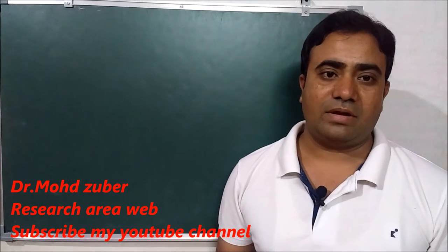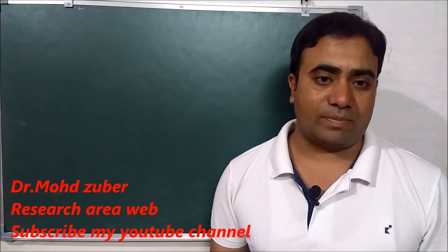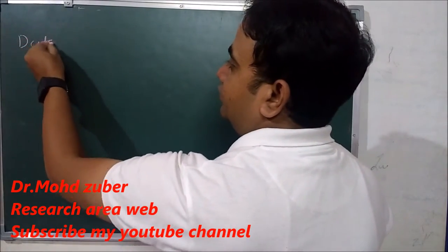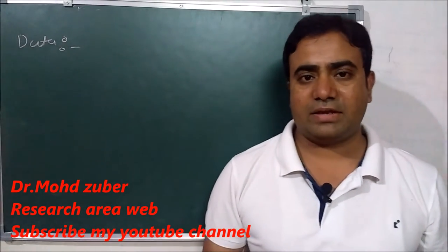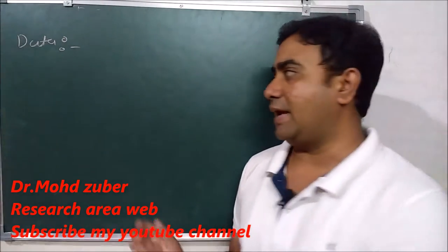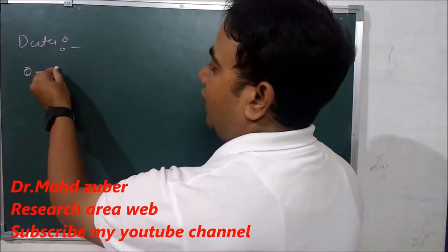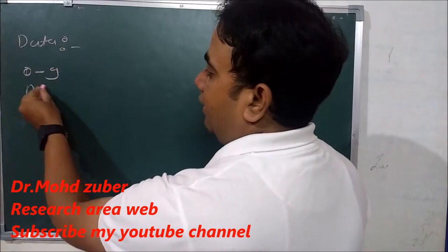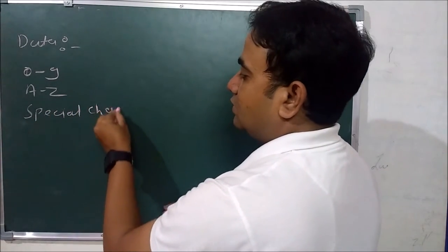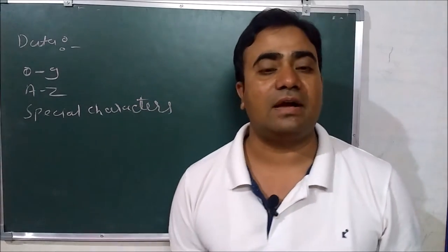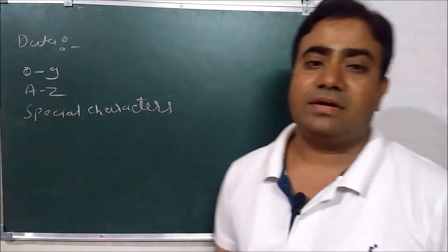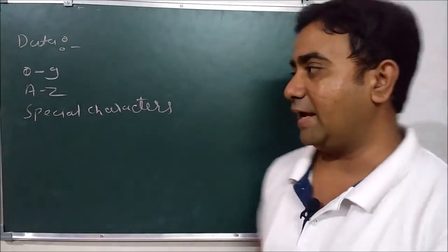Before explaining data structures, I would like to explain what is data. Data is a Latin word whose plural form is datum. There are many types: numeric data like 0 to 9, alphabetic data like A to Z, and special character data like dollar sign, at sign, and ampersand sign — these are also data.